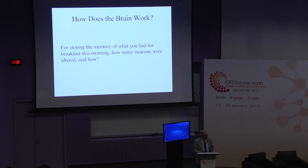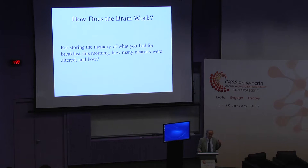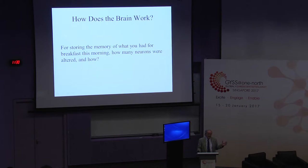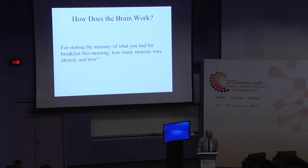Just to show how open the problem is: many of us had breakfast this morning and could probably remember what we had. But how many neurons did we alter in making this memory? Was it one? Ten? A hundred? A thousand? A million? No one has any idea. Neuroscience has been going on for a long time, and this very basic question — which a naive person on the street might ask — has not the remotest clue of an answer.